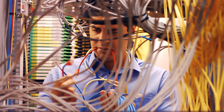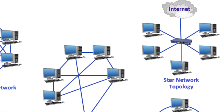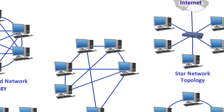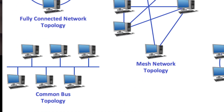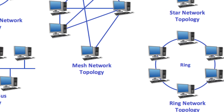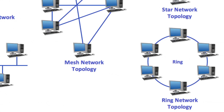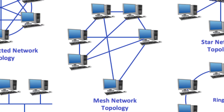Networking topologies play a significant role in how networks are structured. You'll encounter topologies like the star, where all devices are connected to a central hub; the bus, where all devices share a common communication line; the ring, where all devices are connected in a circular fashion; and the mesh, which offers redundancy through multiple interconnects. Each one has its own advantages and disadvantages.